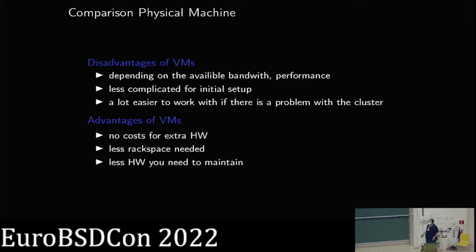What are the advantages and disadvantages of doing it in VMs? Normally I tend to run network infrastructure on physical machines. The problem with VMs is that you're already depending on the cluster to work for the network to function. So if your cluster breaks, it can get complicated to fix it if you don't really have network access. Depending on how much bandwidth you have, you can also sometimes have a performance bottleneck that's a bit harder to debug in a virtual machine.